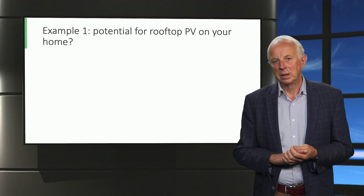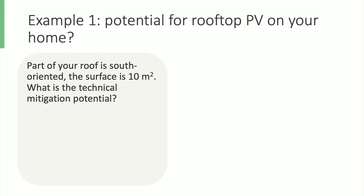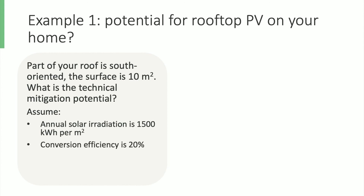Let's do an example calculation of the technical mitigation potential. For example, you want to estimate the technical potential for photovoltaic solar energy, also known as a PV system, on your roof. We assume that your roof is south-oriented, has the right inclination, and the surface is 10 square meters. The annual solar radiation on your roof is 1500 kWh per square meter, and the conversion efficiency of available solar modules is 20%. By installing a solar system, you will avoid production by fossil power plants, and assume that the emission factor of electricity from the grid is 0.4 kg per kWh.